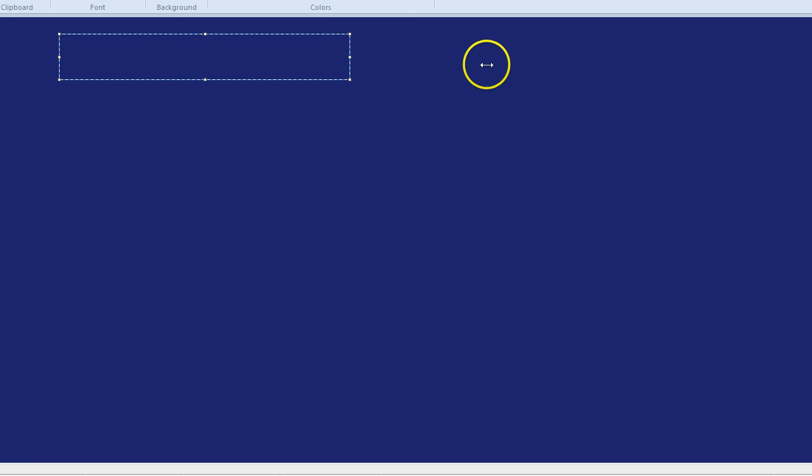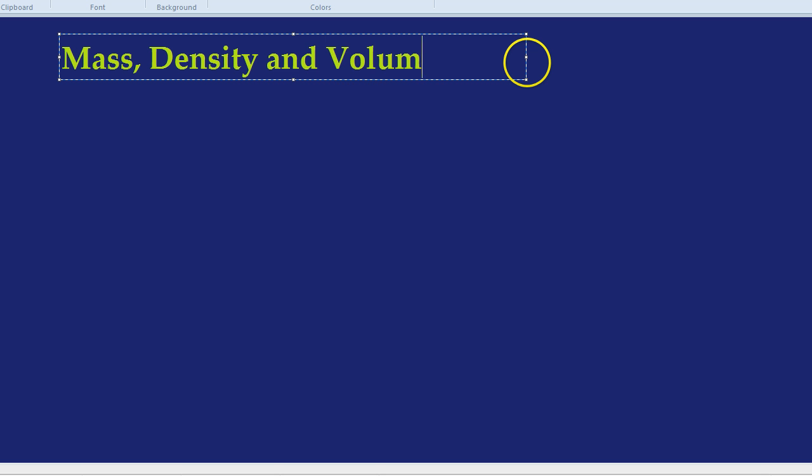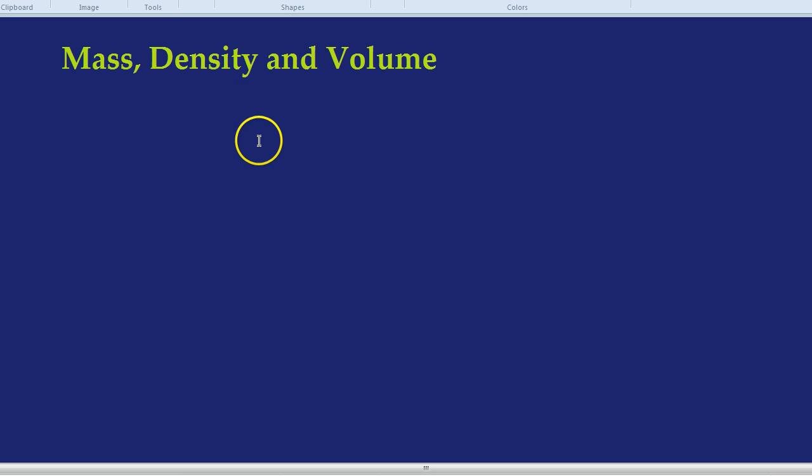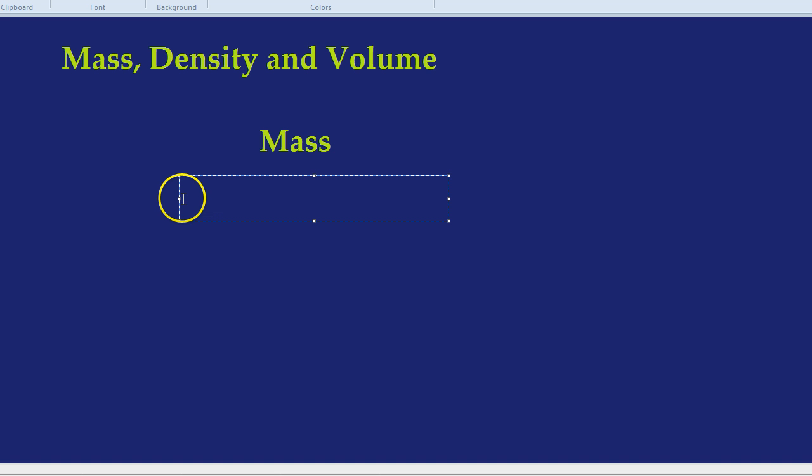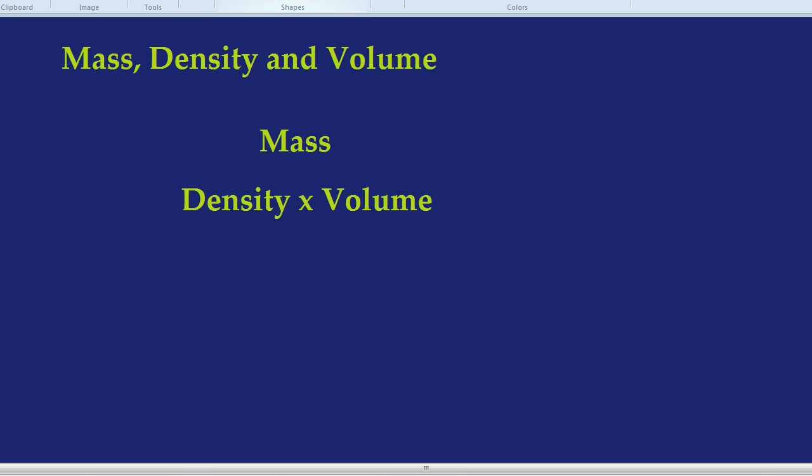How does the triangle look? At the top, we have mass. Beneath mass, we have density multiplied by volume. What we need to do to complete our triangle is simply draw a line in between, and that line represents divided by. And then our triangle is almost done. I don't really know why I call it a love triangle, but you get the idea.